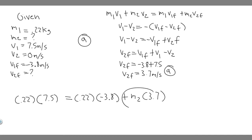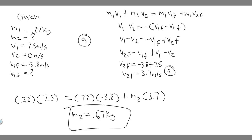Solving for M2, we move the known term to the other side and divide by 3.7. Working through the algebra, we get M2 ≈ 0.672 kg, which rounds to 0.67 kg. So the mass of the target ball is 0.67 kilograms — that's the answer to Part B.